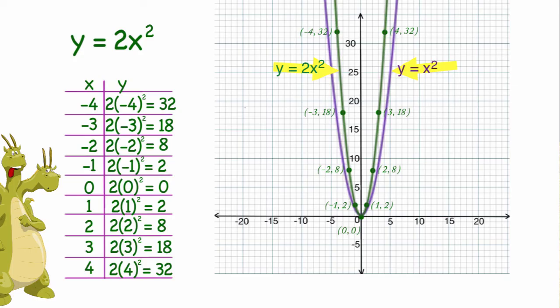So I'm comparing these two graphs. They both are U-shaped. However, it looks like y equals 2x squared is a skinnier graph than y equals x squared.